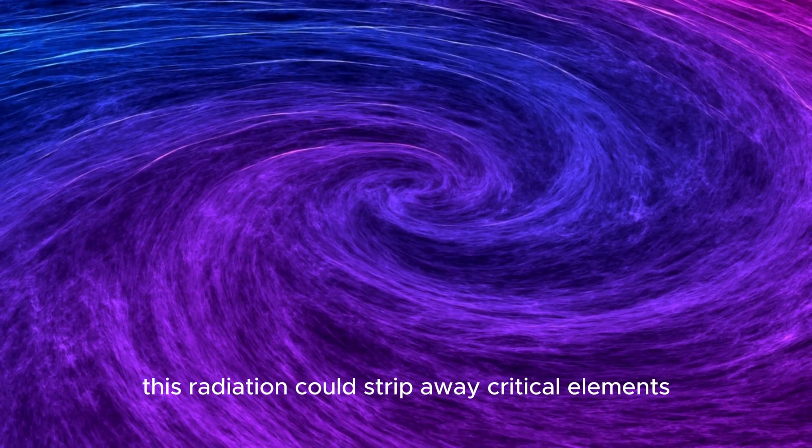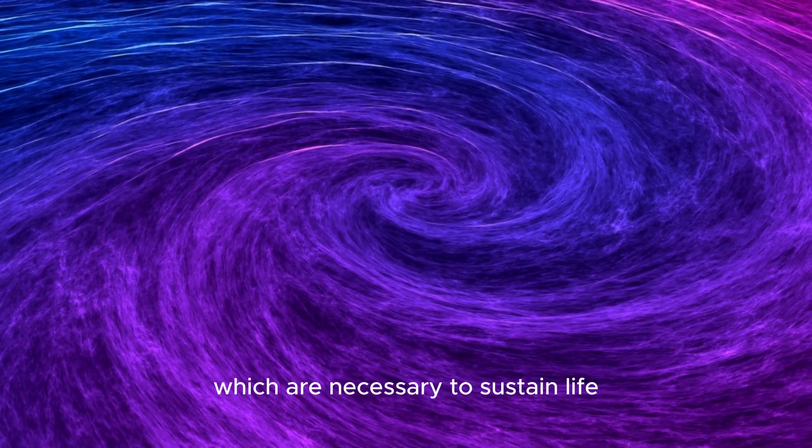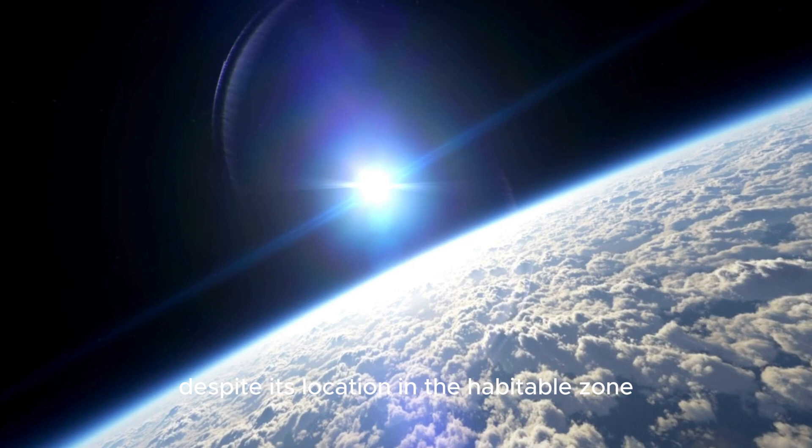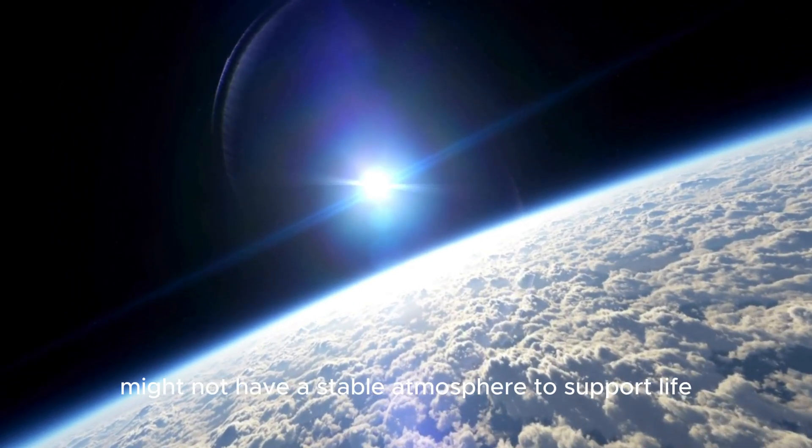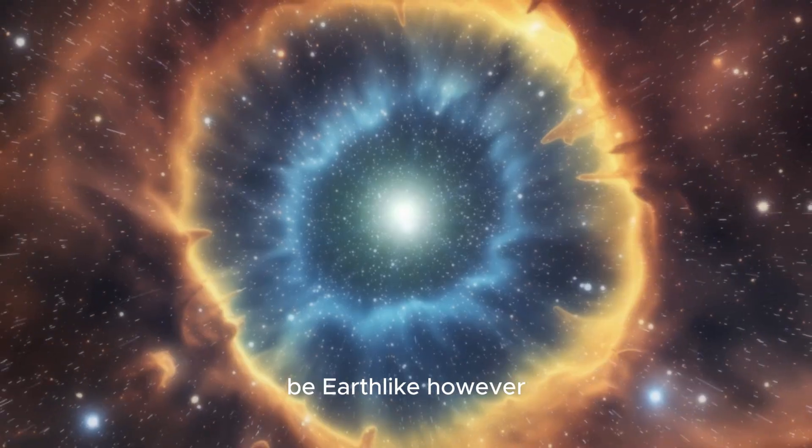This radiation could strip away critical elements like hydrogen, nitrogen, and oxygen, which are necessary to sustain life. Despite its location in the habitable zone, Proxima b might not have a stable atmosphere to support life, casting doubt on its potential to be Earth-like.